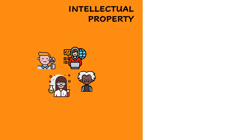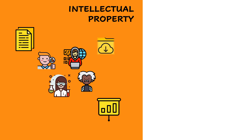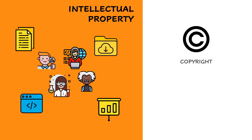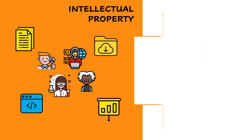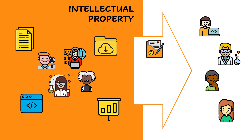As scientists, we create intellectual property, which means products of our mind — papers, presentations, data, code, etc. Intellectual property is automatically protected by copyright, which means that we, creators of the material, have the right to produce copies of our work, create derivatives (that is modifications and extensions), distribute copies, etc. Now, if we want to share our work products with anybody else, we have to add a license.